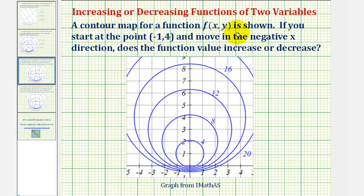A contour map for a function f of x comma y is shown. If you start at the point negative one comma four and move in the negative x direction, does the function value increase or decrease?